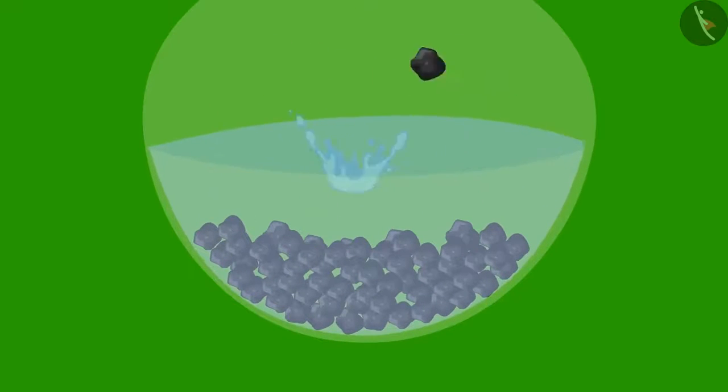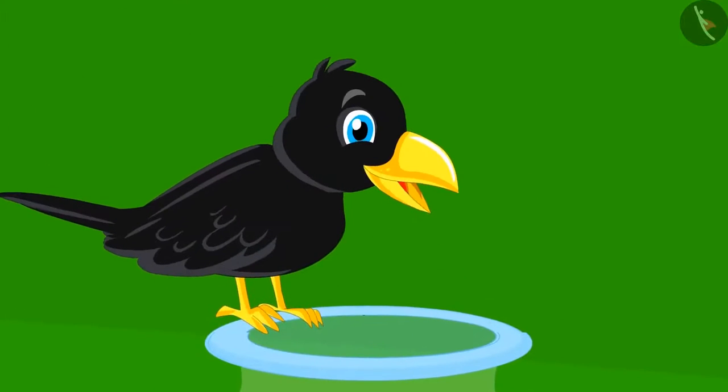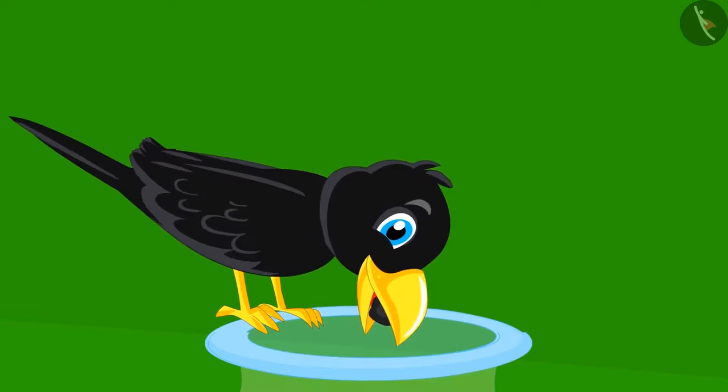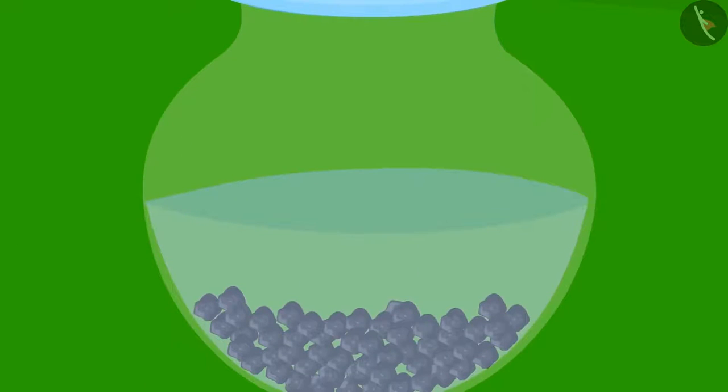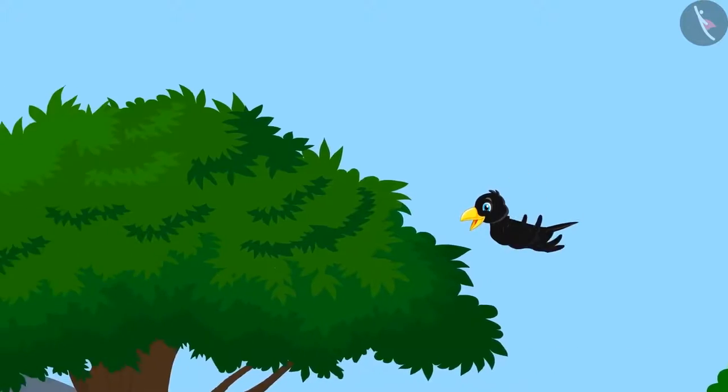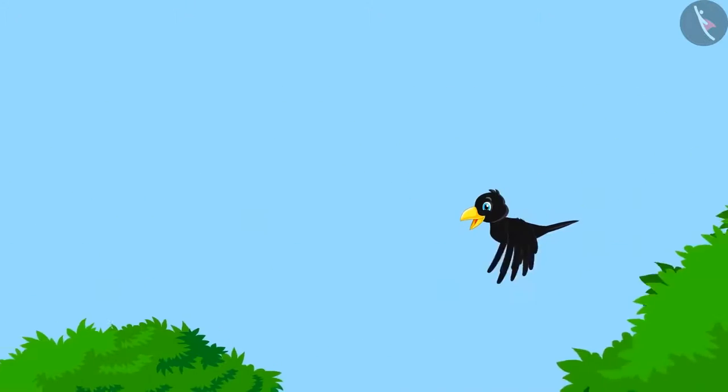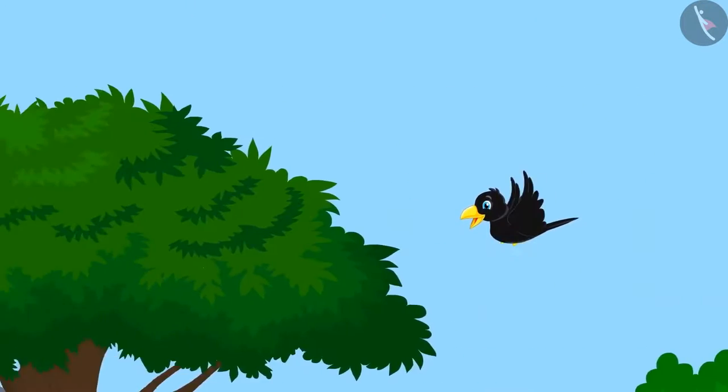The crow put these 36 stones in the pitcher and he was happy to see the water level rising up. He immediately inserted his beak into the pitcher and tried to drink the water. But the water was still very low. The crow left again in search of more stones.